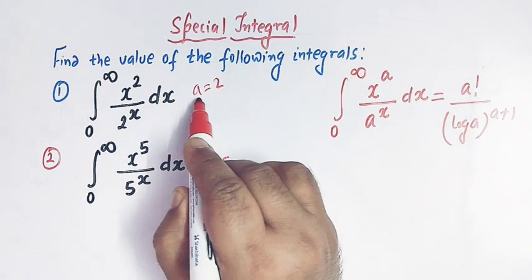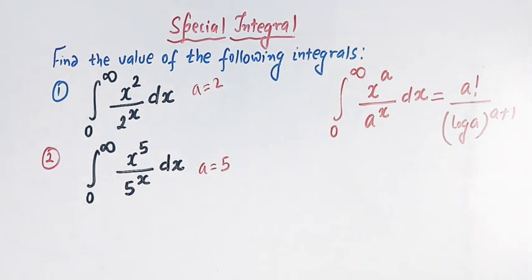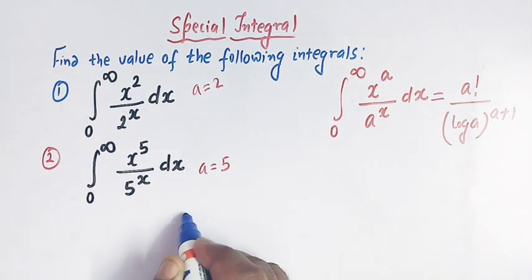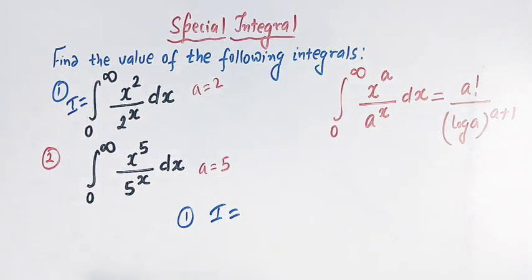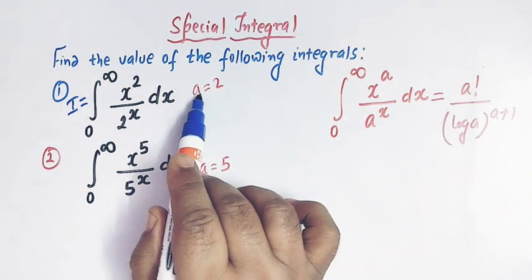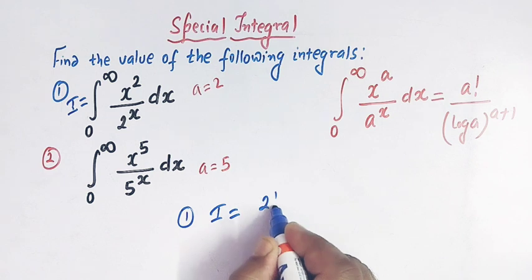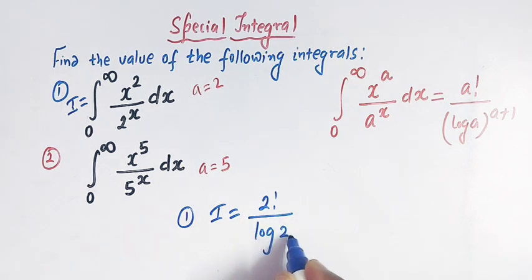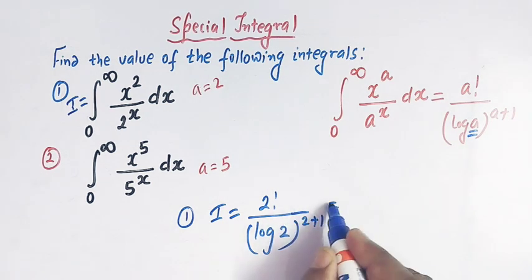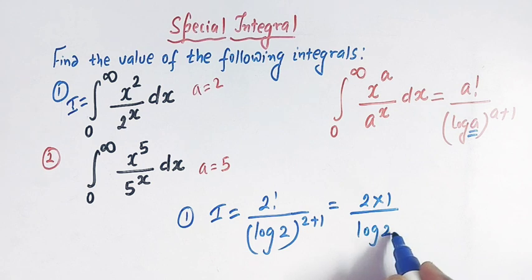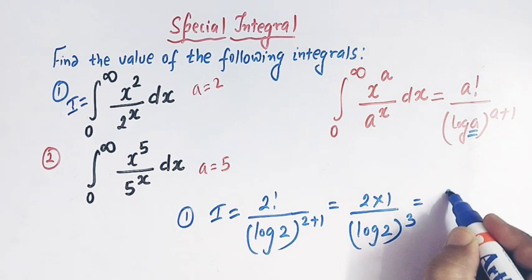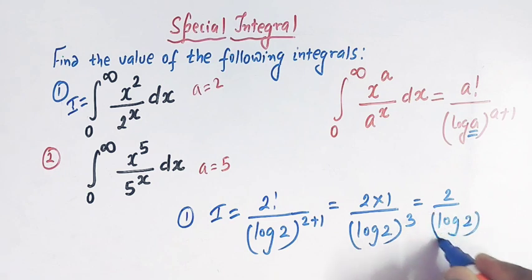In the first integral we have a equal to 2, and in the second integral a is equal to 5. The value of the first integral i can be written directly as: 2 factorial divided by log of 2 raised to 2 plus 1. So 2 factorial is simply 2 times 1, giving us 2 over (log 2)^3.